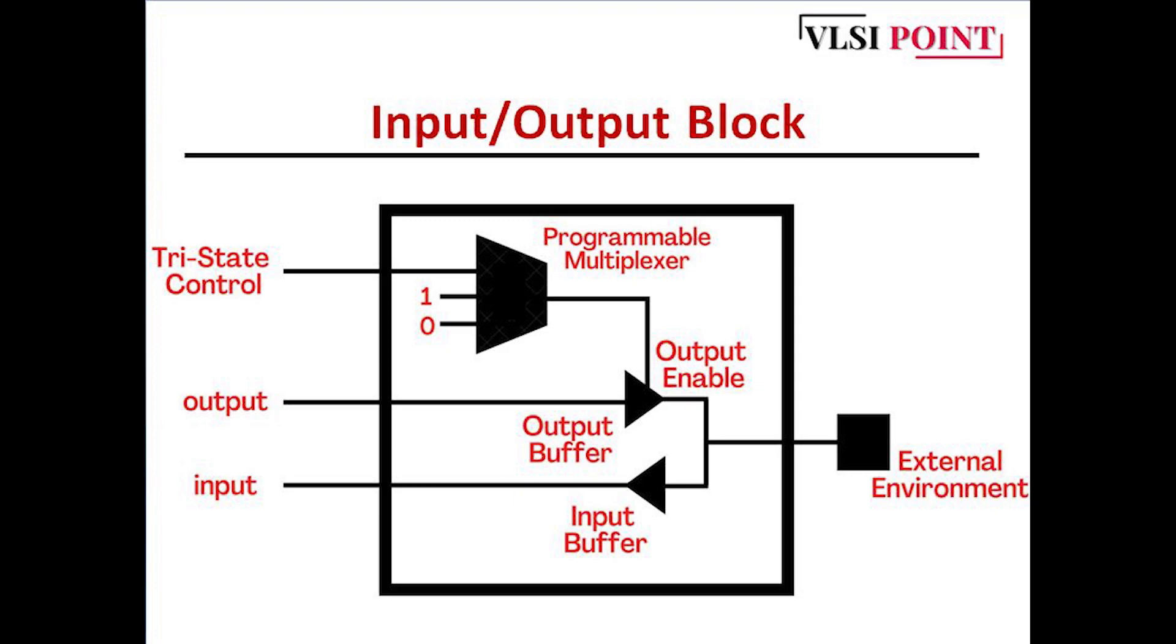It provides a bi-directional interface between the IO pins and the FPGA internal logic. There is an input buffer, as you can see in this figure, and a tri-state buffer enabled by the programmable multiplexer. Now we will see how exactly it is working. The input buffer is responsible for carrying the logic through IO pins from the external environment to the FPGA.